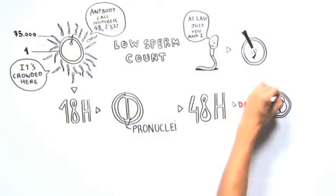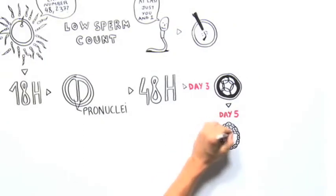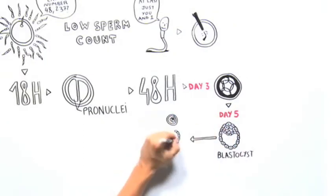Sometimes, doctors choose to grow them for 2 additional days. At this stage, on day 5, the embryos are called blastocysts. A good quality blastocyst has the best chance of implanting.